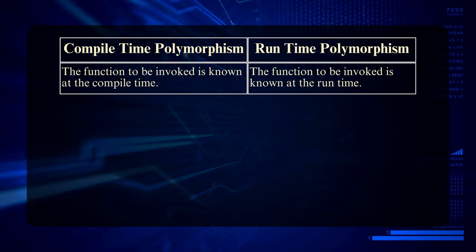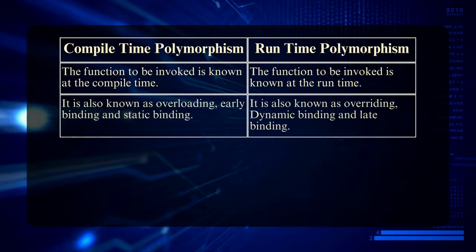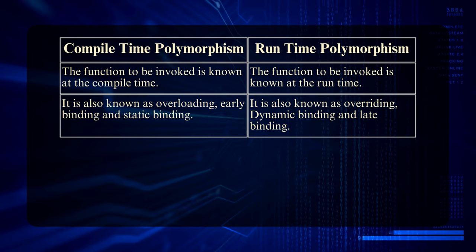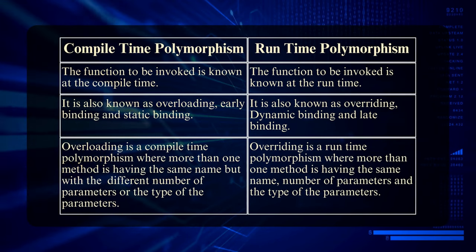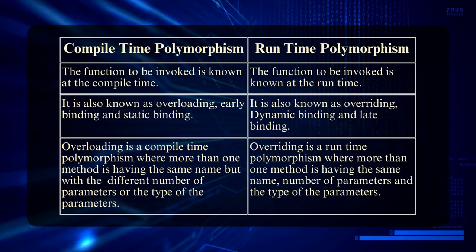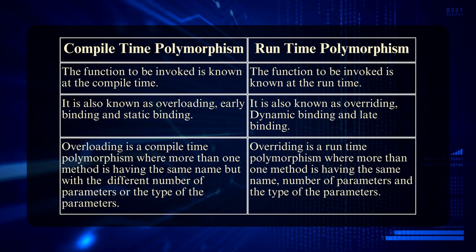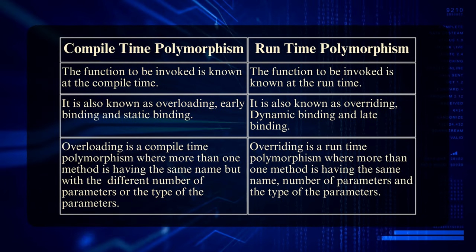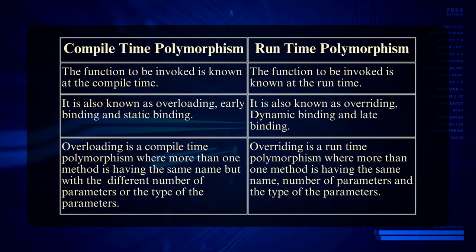The basic difference between compile time and runtime polymorphism: in compile time polymorphism the function is invoked at compile time — known as overloading, early binding, and static binding. In runtime polymorphism the function is invoked at runtime — known as overriding, dynamic binding, and late binding. In overloading, more than one function has the same name but different type and number of parameters. In overriding, the base class and derived class have the same function name and same type of parameters.